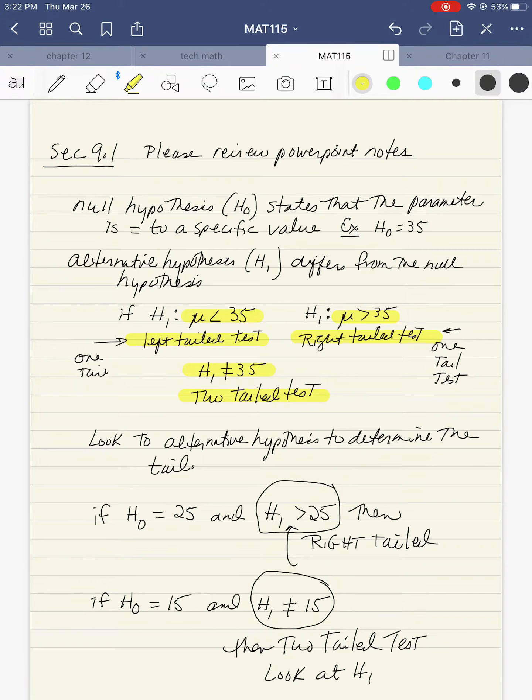The alternative hypothesis H1 differs from the null hypothesis. If H1 has mu less than 35, this means it's a left-tailed test. You can have greater than 35, which means it's a right-tailed test. And you can have does not equal 35, which means it's a two-tailed test.